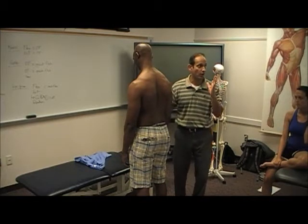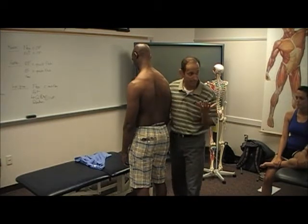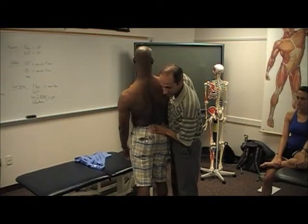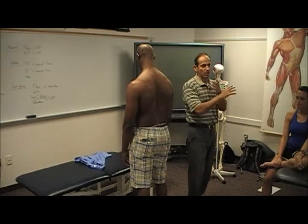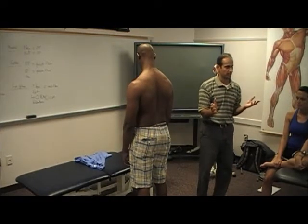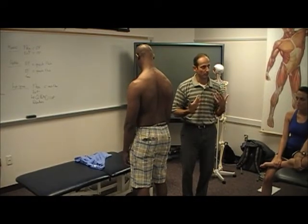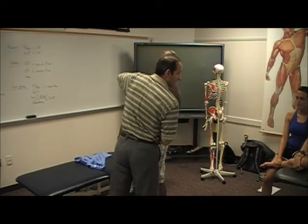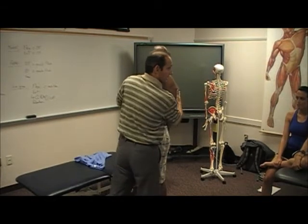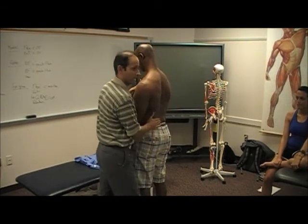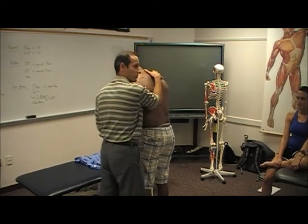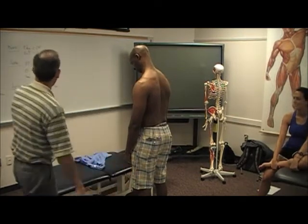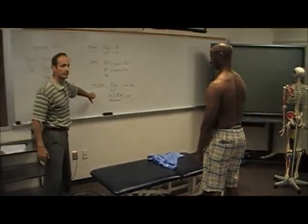Just know there are other variations — for example, extension, side bending left, and then rotation right — so that's a different quadrant position. But we don't want to confuse you there. To keep it simple: when we talk about lumbar quadrants, we're talking about extension, side bending, and rotation — right lumbar quadrant and left lumbar quadrant. And just know that you can do quadrants in flexion too. So that's part of the lumbar clearing.